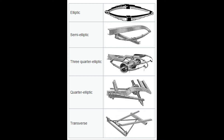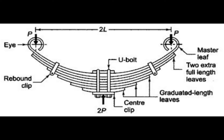There are different parts in the leaf springs. Some of them are the master leaf, which you can see at both the right and left hand top sides. Below that are two extra full length leaves, and the remaining are graduated leaves. There will also be a center clip, U-clip, and rounded clips to hold all the leaves together.